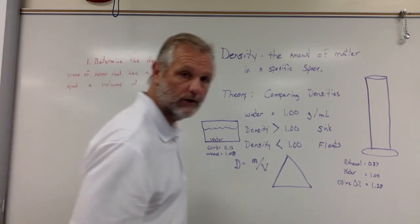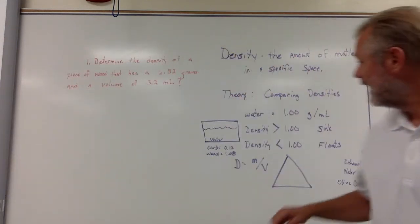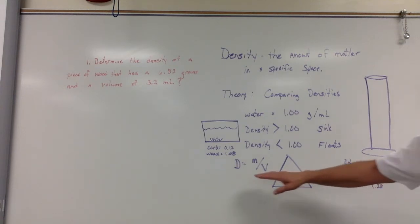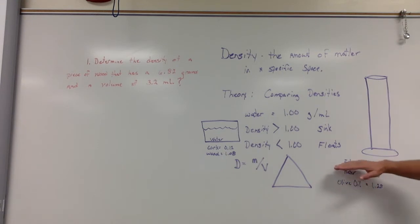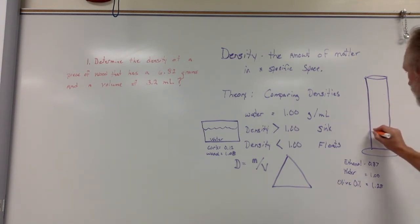Alright, the next thing I want to talk about is comparing densities, not of a solid object against water, but what happens when you compare densities of different liquids? So I have three different liquids. I have ethanol at 0.87, I have water at 1, and olive oil at 1.28. So I'm going to put all of these into this test tube. Well what you're going to find out is they're going to layer out.